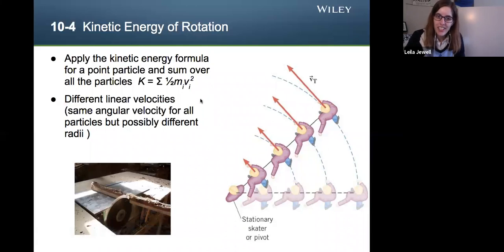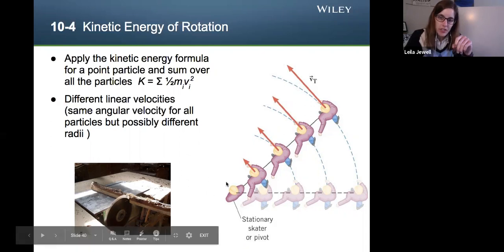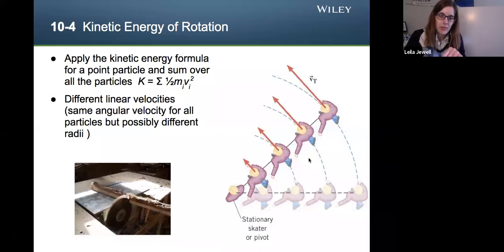So there's different linear velocities for every point, every skater or every part of the mass that's rotating, but yet the same angular velocity. Just because there's a different radii, that causes there to be a different linear velocity. So this is the picture to hold in mind.